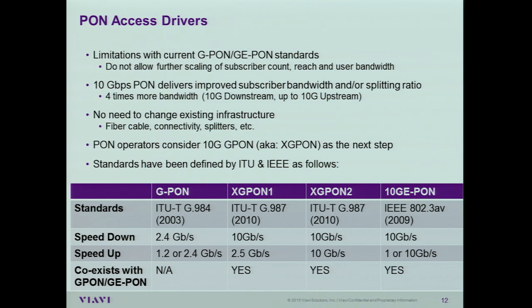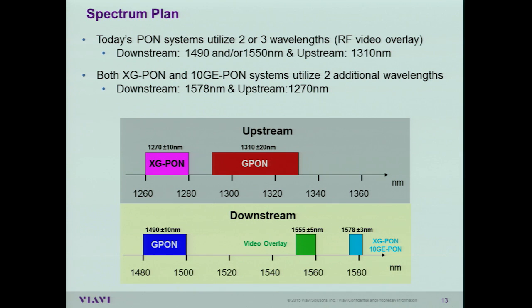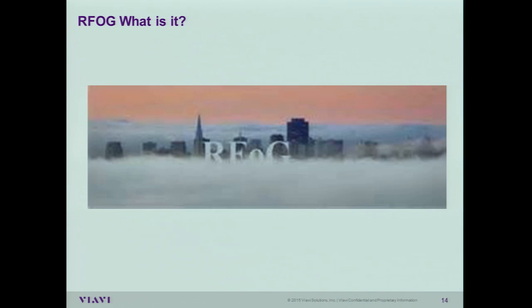When we look at spectrum utilization, the existing PON network uses 1310 nm upstream from the ONT within the home and 1490 nm downstream for data and voice services. In addition, we could have a video overlay at 1550 nm. With 10G PON for high-speed services, we have 1270 nm upstream and 1578 nm downstream.